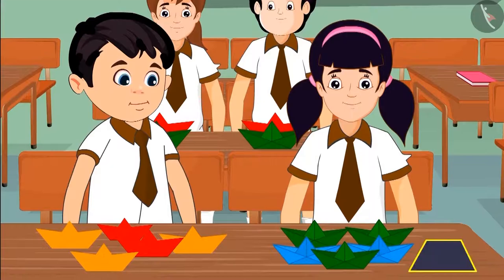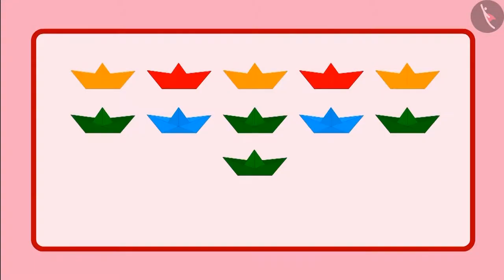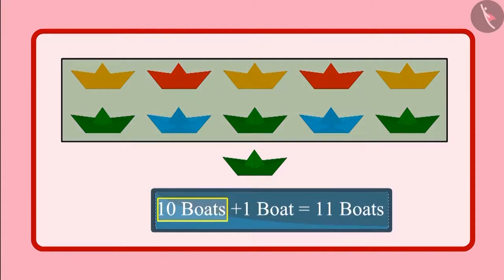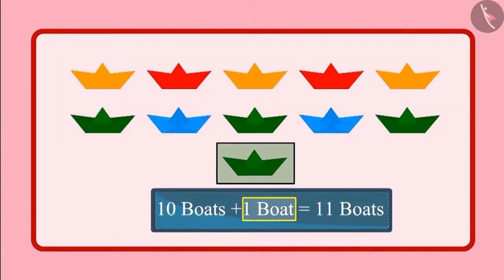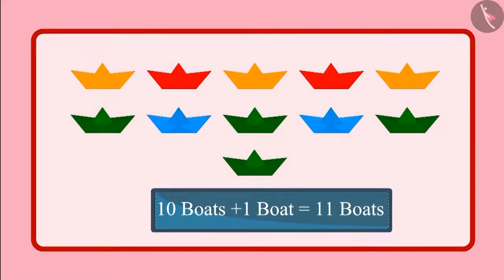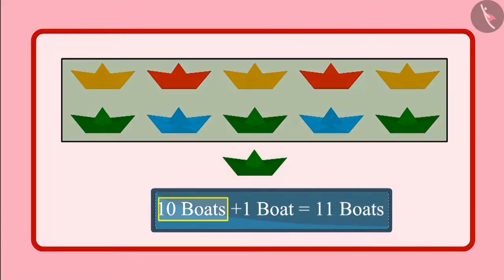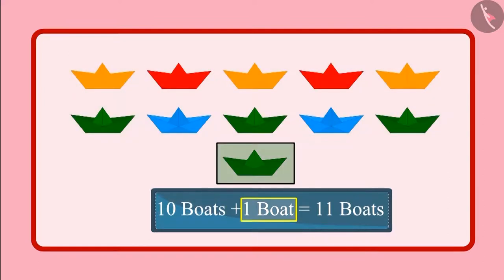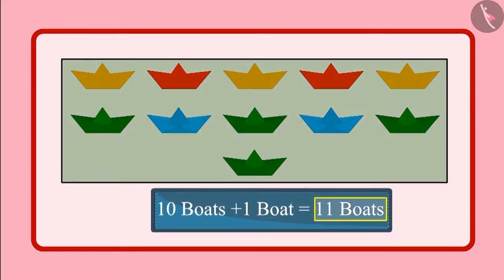Aarti had another paper left and she made another boat with it. So children, can you tell me how many boats do Chotu and Aarti have now? Let us see. 10 boats along with another boat, so there are a total of 11 boats. When we have 10 boats and add another one, then we get a total of 11 boats.